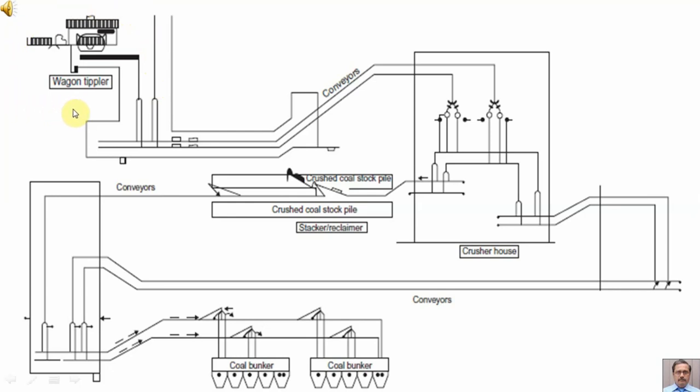In this diagram you can see Wagon Tipler. The coal received from the colliery in railway wagons is dropped in the hoppers here.